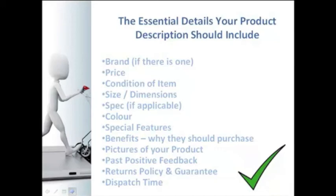Always include a returns policy and guarantee. eBay ask that you include this because it's important that a potential buyer knows exactly where they stand. With all my products I've always offered a no-quibble return within usually 14 days or 30 days. The product doesn't have to be faulty — I offer a full no-quibble refund if the buyer lets me know and returns the item within that time frame. It's a money-back guarantee. Obviously if an item is faulty, you should always offer a return and refund or exchange policy for that as well.